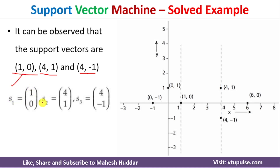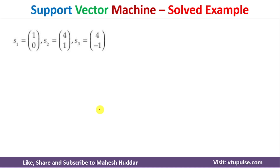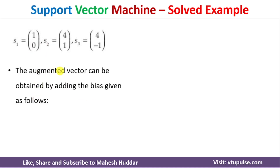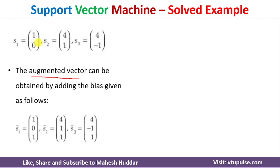We represent the support vectors as: S1 = (1,0), S2 = (4,1), S3 = (4,-1). Now we need to add a bias to these support vectors. Once we add a bias, these are called augmented vectors. So the augmented vectors are: S1-bar = (1,0,1), S2-bar = (4,1,1), and S3-bar = (4,-1,1).